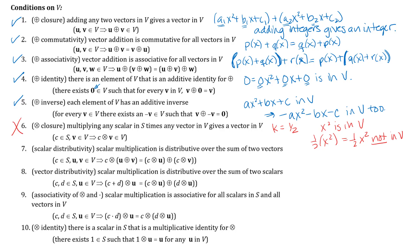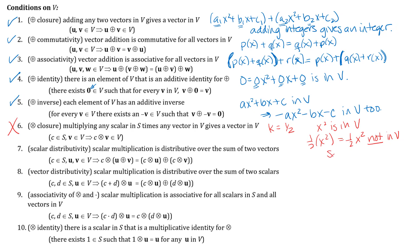At this point we can say that the set V is not a vector space. You don't need to check any other conditions to determine that — if any one condition fails, it is not a vector space. The only condition that fails in this case is scalar multiplication closure, so V is not a vector space.